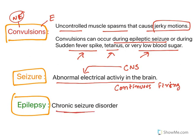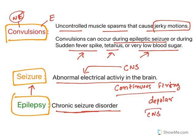Now epilepsy — when the seizures become chronic or occur multiple times, then it becomes epilepsy. The major characteristic of epilepsy is seizures. Epilepsy is characterized by multiple seizures, and continuous firing, meaning repetitive depolarization or continuous CNS activity of the brain, is what causes epilepsy.